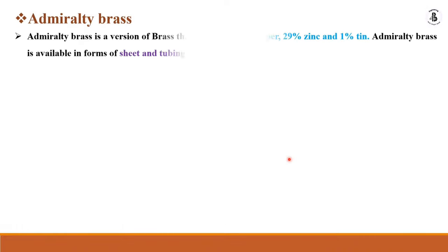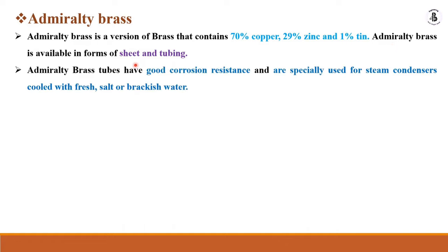Admiralty brass is a version of brass that contains 70% copper, 29% zinc and 1% tin. Admiralty brass is available in sheet and tubing form. Admiralty brass tubes have good corrosion resistance and are used for steam condensers, cooling with salt water or brackish water.